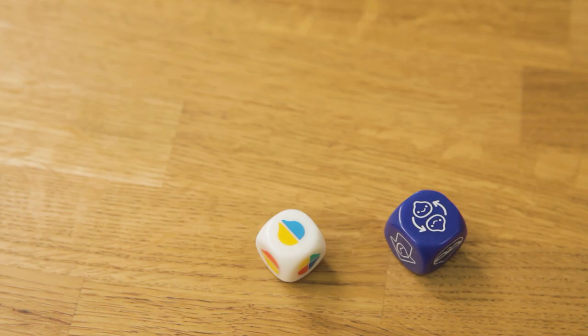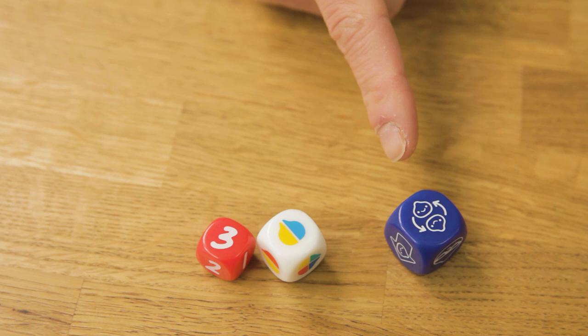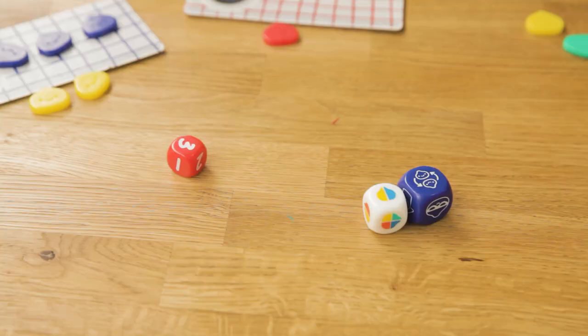Now we keep going. The next player takes the dice and rolls them just as I did. These dice mean draw three from the steamer bag, take a blue or yellow bun from the serving tray and trade a bun with someone else's.